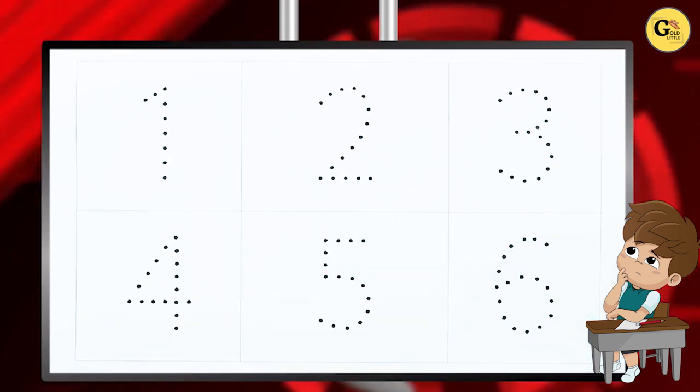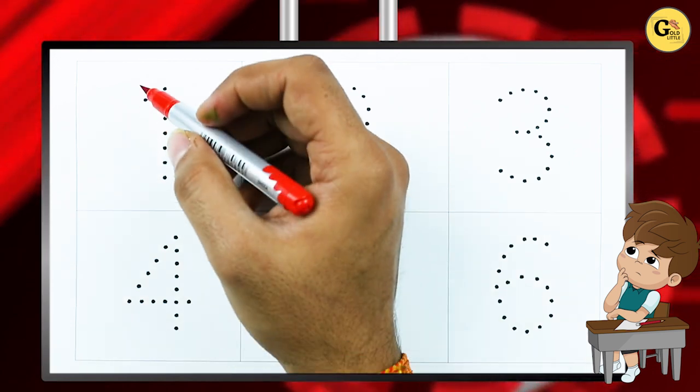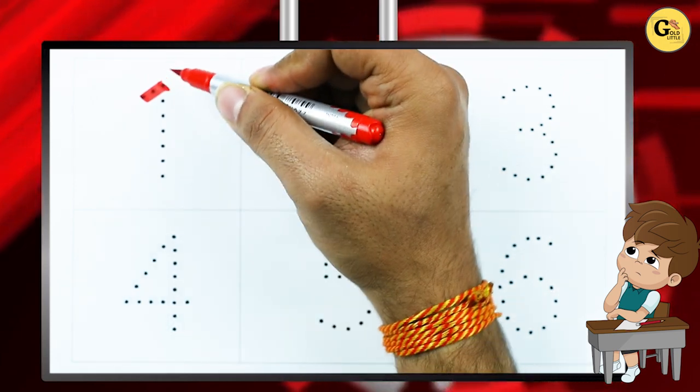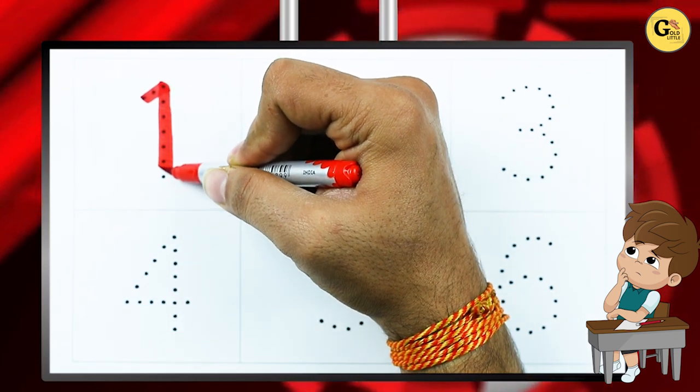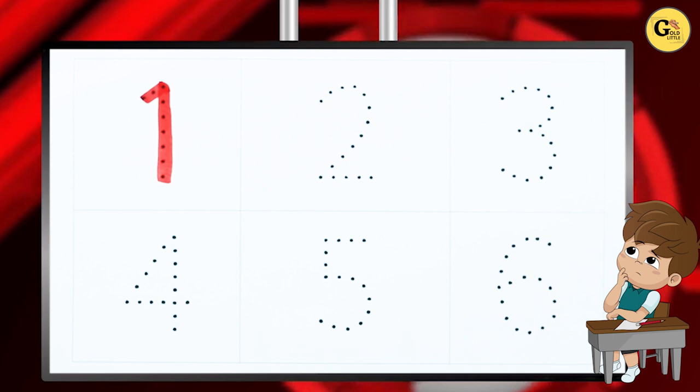How to write numbers 1 to 10? It's number 1, number 1 with red color.